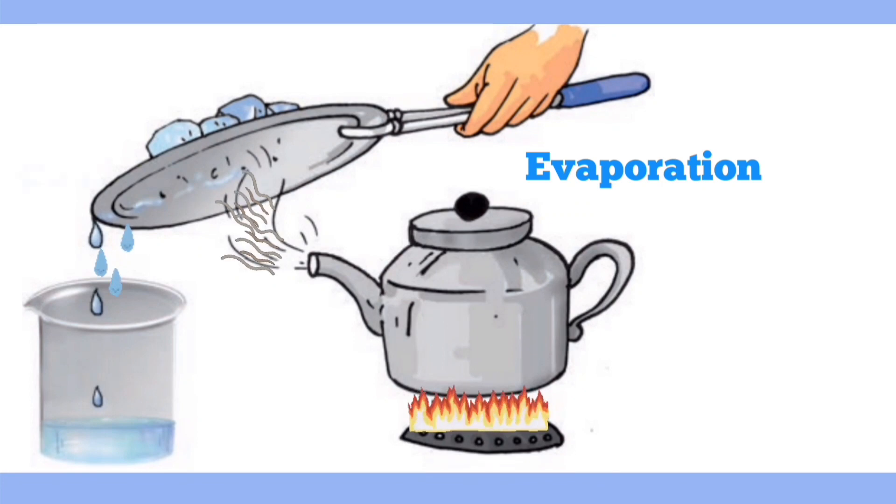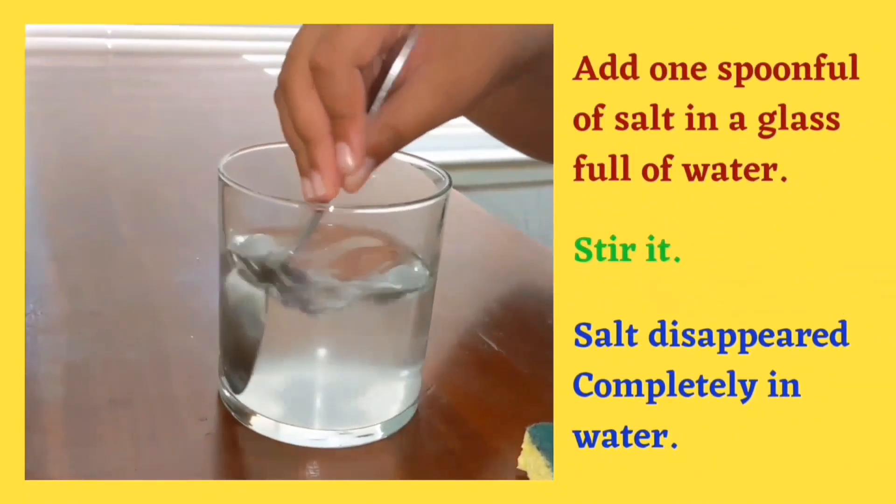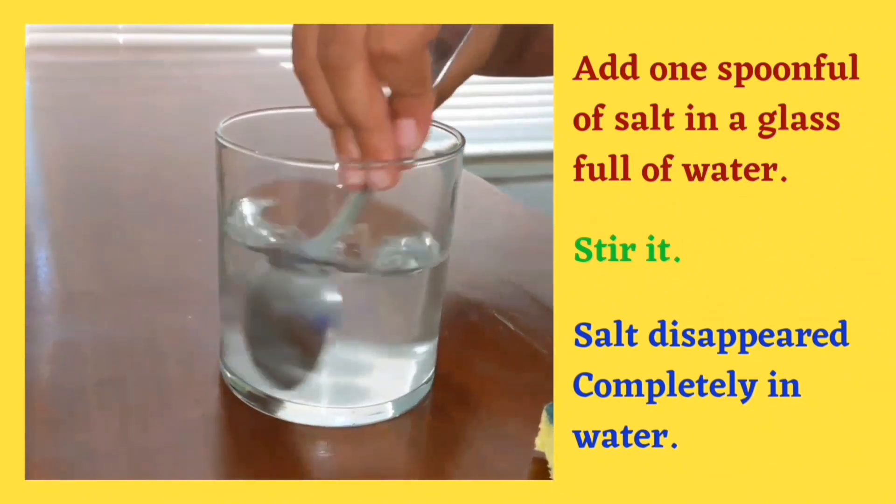Water in the kettle converts into water vapor and comes out through the spout. When it comes in contact with the cold metal plate, these water vapors convert into water droplets. This process is called condensation. All water evaporates and salt is left behind in the kettle. When salt is added to water and stirred, the salt disappears and dissolves completely in water.